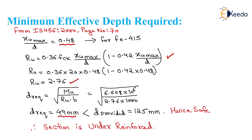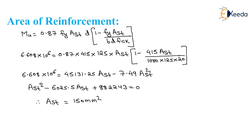D_required equals 49 mm, which is less than D_effective provided. Hence safe. Therefore the section is under-reinforced.